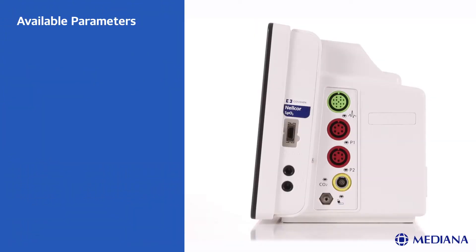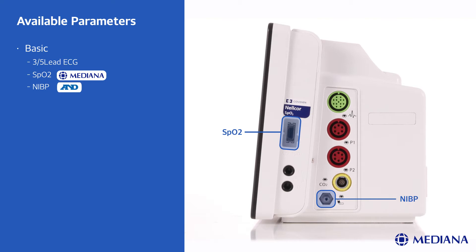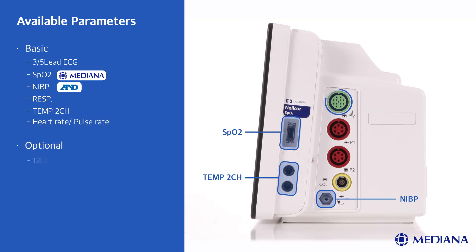The right side of the product shows the basic and optional parameters. The basics are 3/5 lead ECG, Mediana SPO2, NIBP from A&D, respiration, 2 channels of temperature and heart and pulse rate. The optionals are 12 lead ECG with the University of Glasgow algorithm.